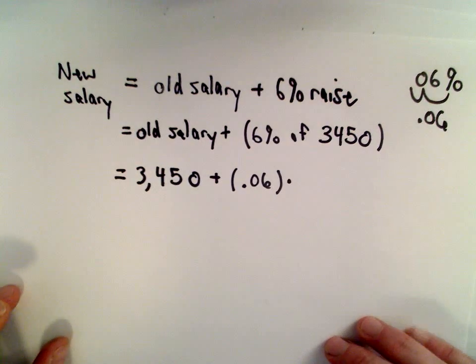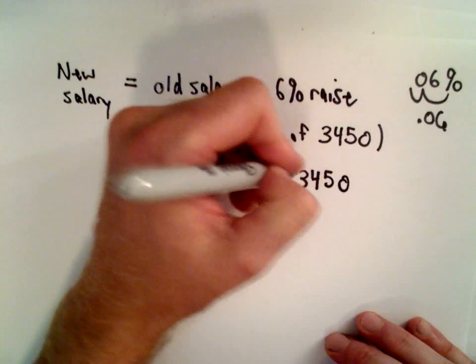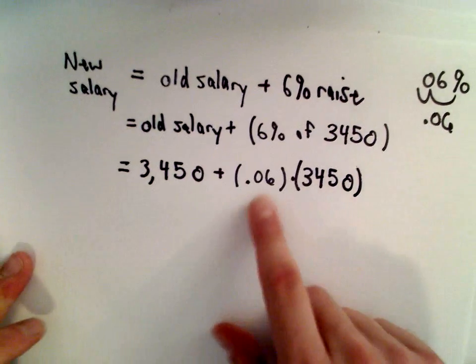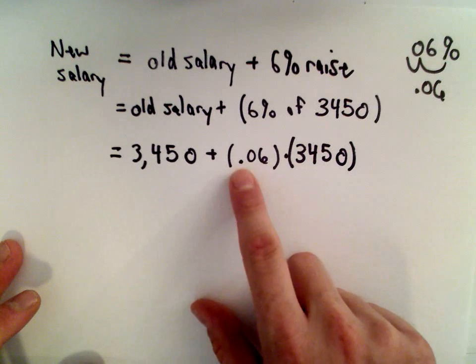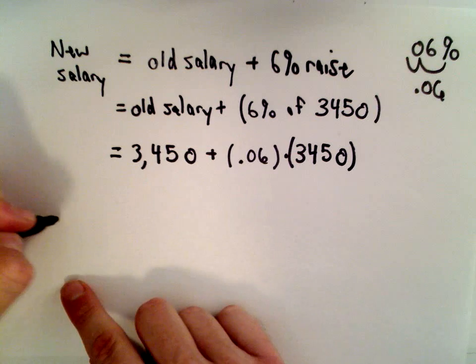Of, we can write that as multiplication, $3,450. So the first thing I'm going to do is multiply .06 times $3,450.